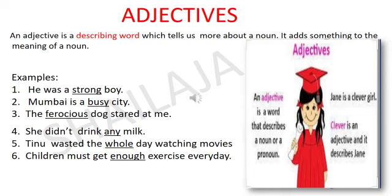So what is an adjective? An adjective is a describing word which tells us more about a noun. It adds something to the meaning of a noun. You can also say an adjective is a word that describes a noun or a pronoun. They are also called describing words.